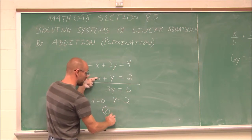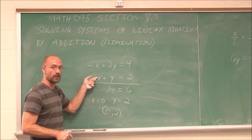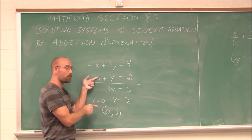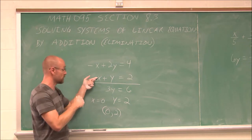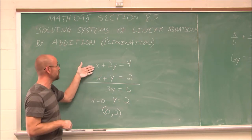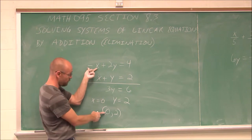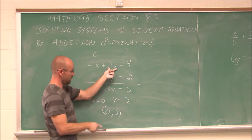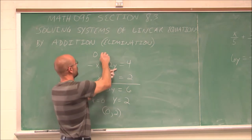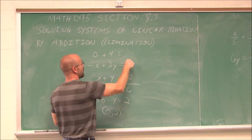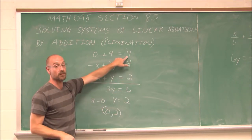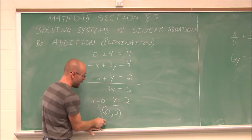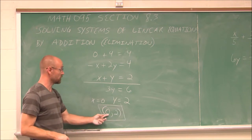So I have the ordered pair (0, 2) for this equation. But I want to know that it's a solution to the system. I want to make sure that that point works in both equations. So now I'm going to plug it into this one just to be sure. If this is 0 for my x value, negative 0 is still 0. And 2 times 2 for my y value is 4. Is that equal to 4? Well, 0 plus 4 is, in fact, 4.